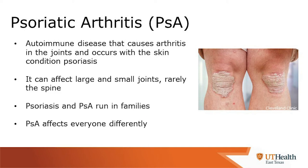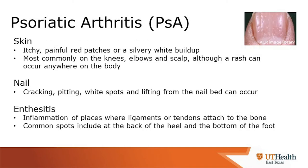On the right is an example of skin psoriasis. In psoriatic arthritis, the psoriasis typically presents as a very itchy, painful, red patch with or without silvery white buildup. It's most commonly found in the knees, elbows, and scalp, but technically the rash can occur anywhere. You can also have nail findings consistent with psoriasis, including cracking, pitting, white spots, and lifting of the nail from the nail bed.